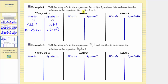Notice how we have two times the quantity x plus one minus three, so the next step in the story is subtract three, which gives us the left side of the equation: two times the quantity x plus one minus three. And because this is equal to five, we want the result to be equal to five, which does give us the equation two times the quantity x plus one minus three equals five.